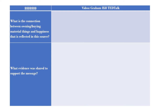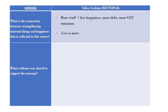Let's take a look at some of the points that were brought up in the video. This chart is the same as what you will use to organize the information in the articles you will read this week. First, we zero in on the central ideas — in this case, the connection between owning and buying material things and happiness. Graham Hill makes two related points: first, more stuff equals less happiness, more debt, more CO2 emissions; and going along with that, less is more. He is trying to communicate to his audience that the fewer material things you own or buy, the happier you will be, and he does this using related evidence and explanation.